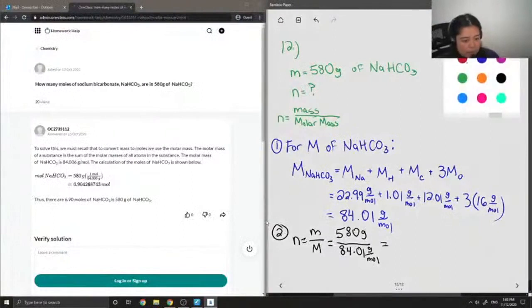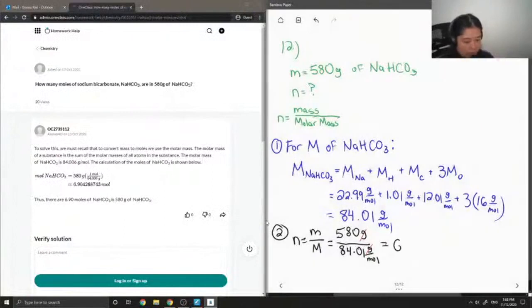You'll notice that our units for grams should cancel out and moles should go from the denominator to the numerator, and we end up getting a final value of 6.90 moles.